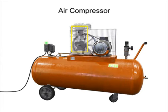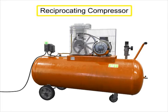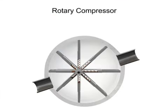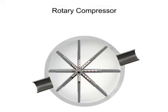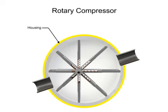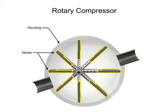Compressors with a piston as the compressing element are called reciprocating compressors. Compressors can also be made with vanes or impellers. These types of compressors are called rotary compressors. Rotary compressors typically consist of a cylindrical housing with adjustable rotary vanes, an inlet, and an outlet.